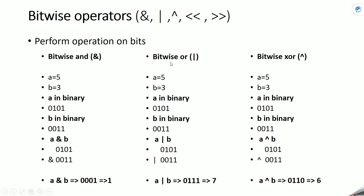The result of bitwise AND is 1. Now let's see bitwise OR. If you perform bitwise OR on the same variables, we get 7. In bitwise OR, if one or both bits are 1 then the result is 1; only if both bits are 0 is the result 0. So the result for these two variables is 7.